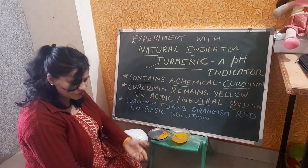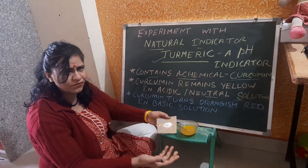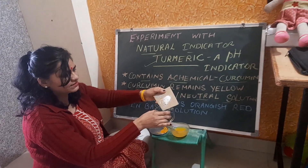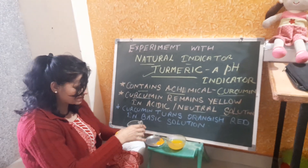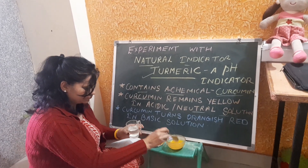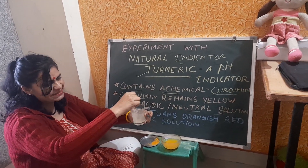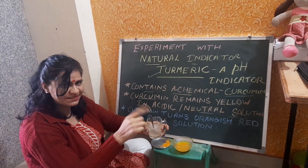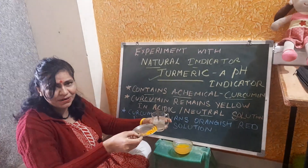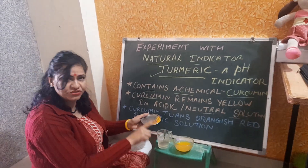As a basic solution, we can take a solution of soap or detergent. You can make this solution by adding any type of detergent or soap in water. Now we are adding detergent powder to water. We mixed it. This is the soap or basic solution — detergent solution or basic solution. Let's see what happens when we add some turmeric, our natural indicator, into this basic solution.